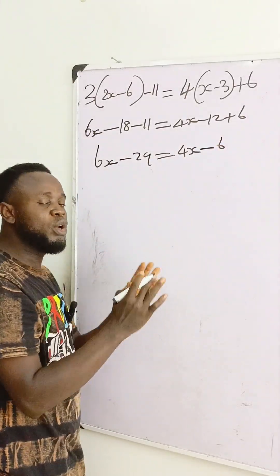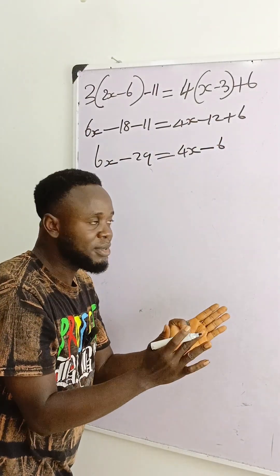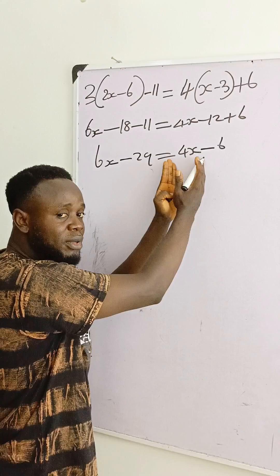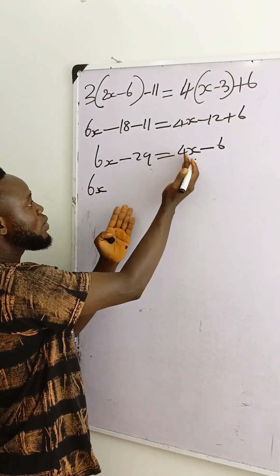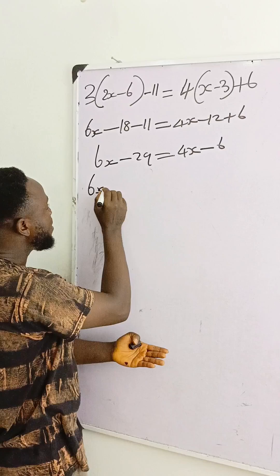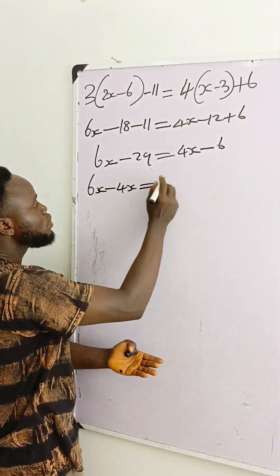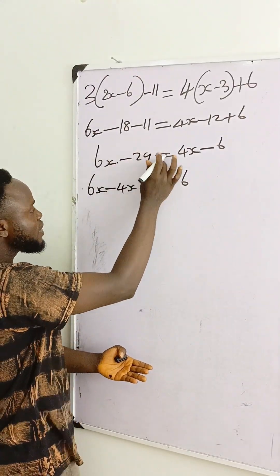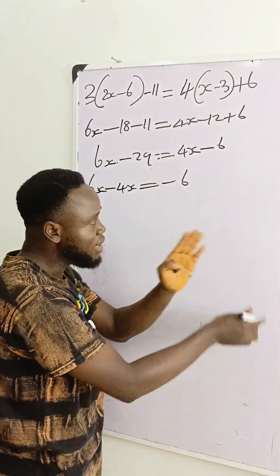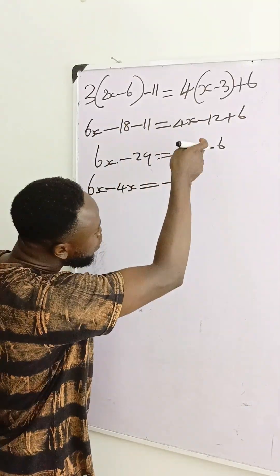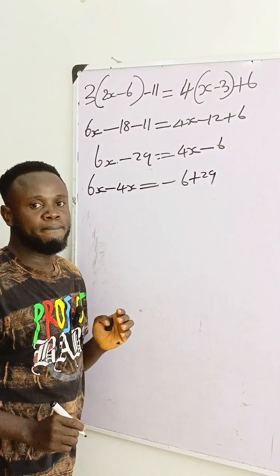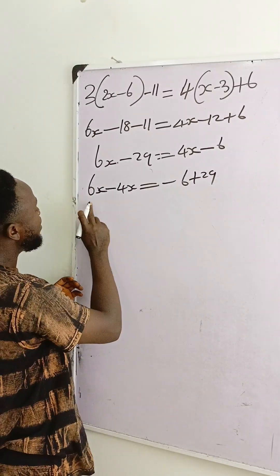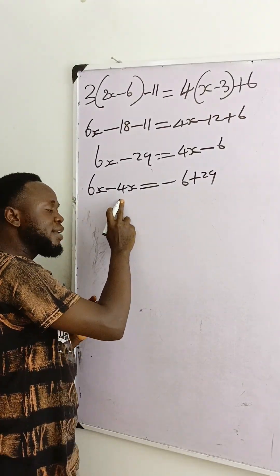Then what do we do? We collect like terms. We have x here, so we take it to this side. 6x minus 4x equals what? It means minus 6. This one doesn't have x, so it will go over to that place. Because it has minus, crossing the side of equality it becomes plus 29.